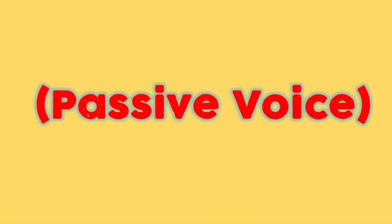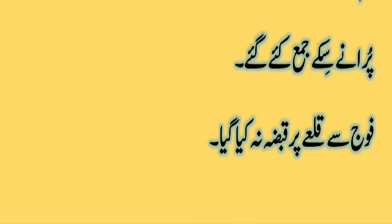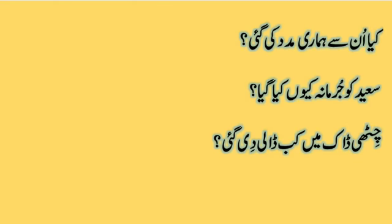Now we are going to start Part Two, which is passive voice sentences. We will have a look at the passive voice sentences that we are going to translate. First: 'Paranhe seekhe jaane ke liye kya gaya.' Second: 'Qile par kabza na kya gaya.' Third: 'Kya unhon ne humari madad ki gai.' Fourth: 'Saeed ko jurmana kyun kiya gaya.' Fifth: 'Chitthi daak mein kab daali di gai.' Now we will translate these one by one.